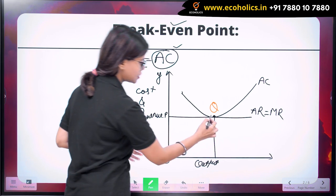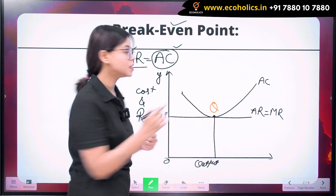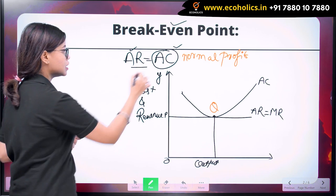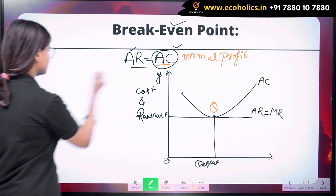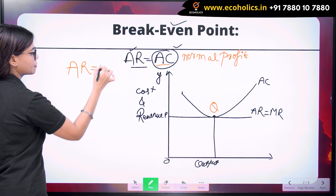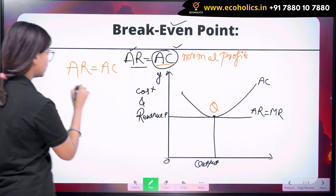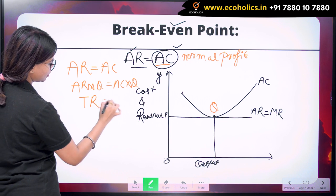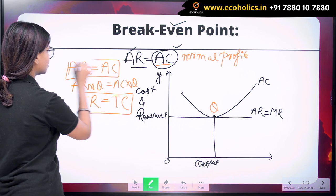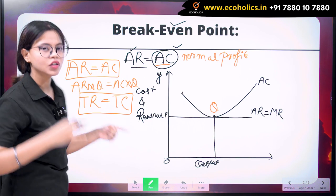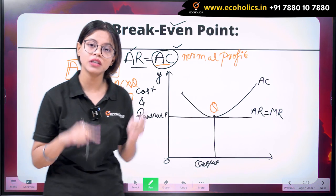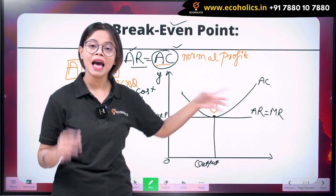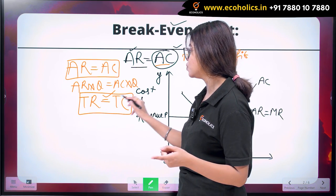At the break-even point, AR is equal to AC and the firm is only earning normal profit — the firm is just able to cover its cost. We can also write this as: if we multiply both sides by Q, that is AR×Q and AC×Q, we get TR equals TC. So the condition for the break-even point is AR equals AC, or equivalently TR equals TC. At output Q, firms are earning only normal profits and total revenue equals total cost.